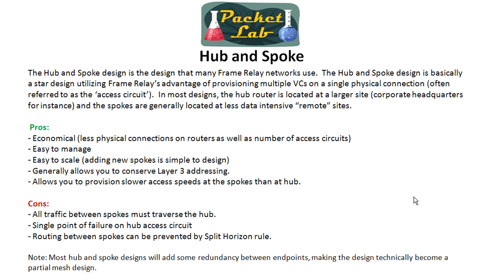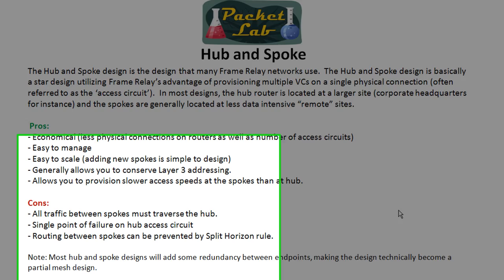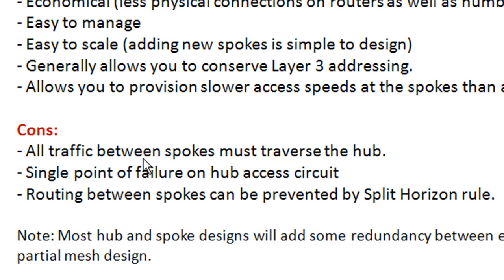Not all is perfect in the hub and spoke world — there are some cons. Probably the biggest one is that all traffic between the spokes is going to have to traverse that hub. So remember the example of R2 speaking to R4: it would have to go through R1 and then back out to R4, and then through R1 and back out to R2. So you're adding a hop there, and this can run into some problems depending on network speed or geographical distance between devices.